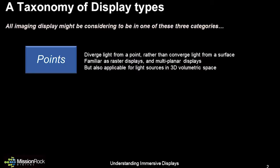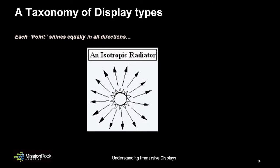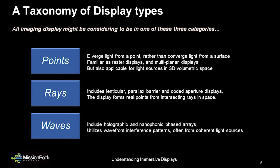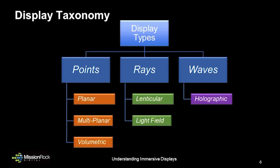One way to characterize display systems is to consider three classes defined by optical properties of light emissions. The first example generates points of light, typically using the familiar concept of pixels. From each point, light is emitted isotropically — roughly equal in all directions. A second example is emission of light rays, using lenticular arrays, parallax barriers, or in some cases a coded aperture, to direct light in a specific geometry and form real points made by intersecting beams. The third example is light waves, forming an image at your retina through an interference pattern, implemented through holographic displays or nanophotonic phased arrays. There are a variety of subcategories for each of these display types.